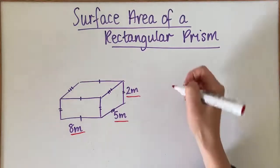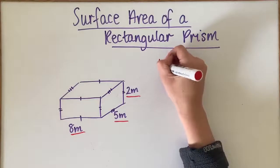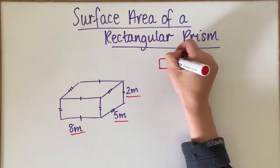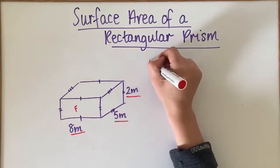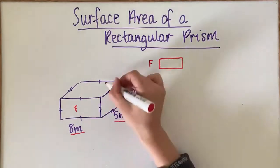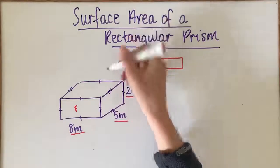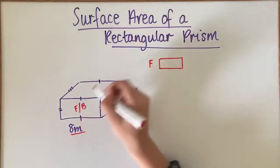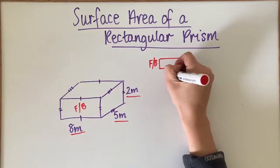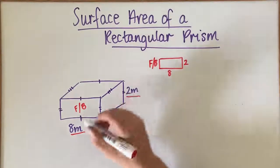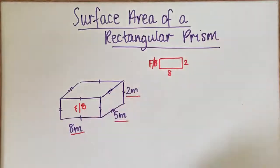So what we need to consider is we've got a front and a back piece. If I think of this as being the front and the back, this side here is actually the same piece. So the front and the back both have the dimensions of 8 by 2, because it's 8 this way and 2 up.